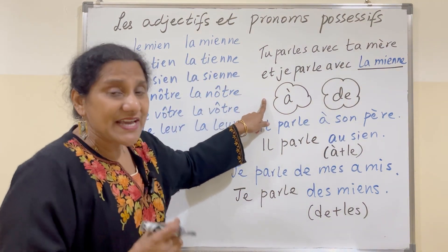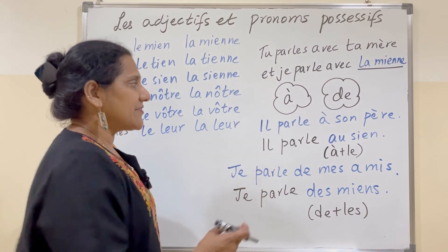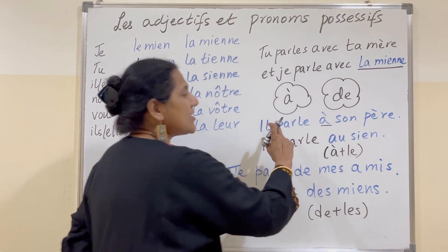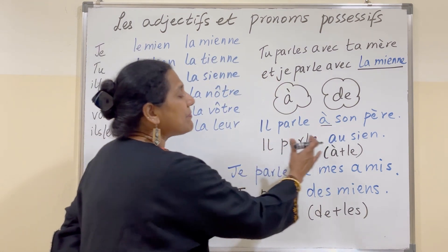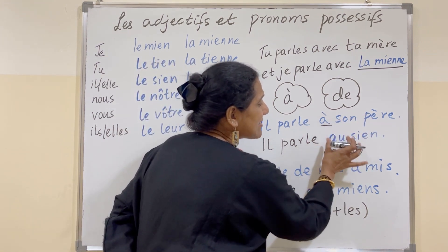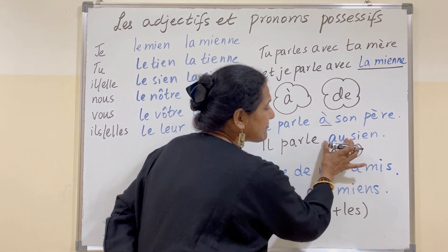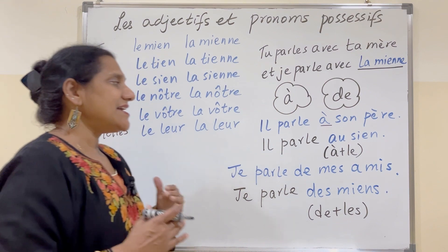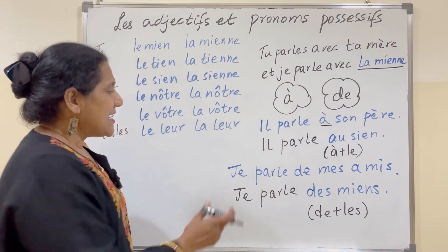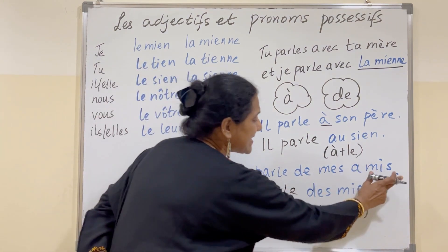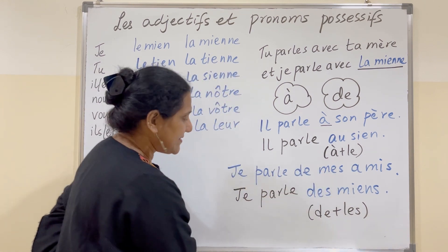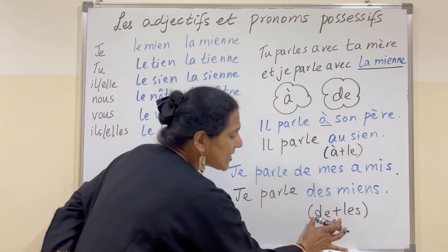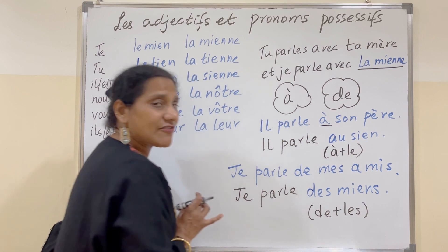You have to be very careful with the prepositions à and de. For example, il va à son père — we can see à here. So he speaks to his father. Now what happens? It becomes au. The contracted form is formed: à plus le, so it becomes au sien — he speaks to his. Je parle de mes amis — I speak of my friends — becomes je parle des miens. De plus les — this contracted form becomes des.